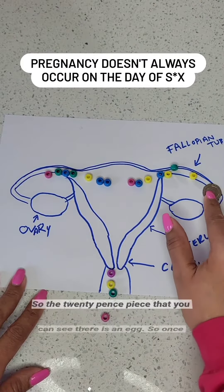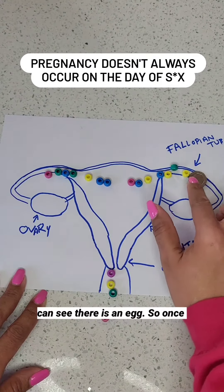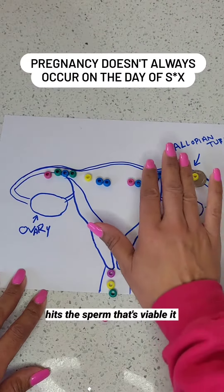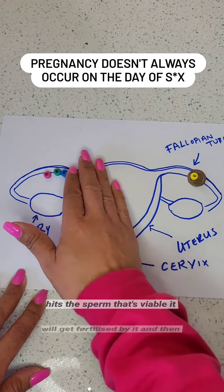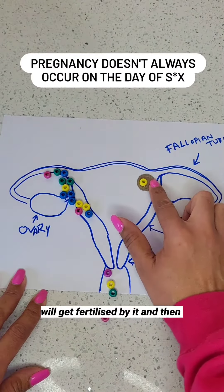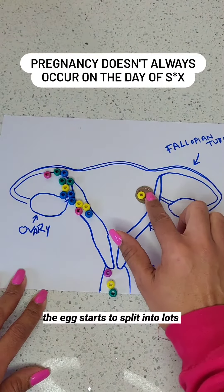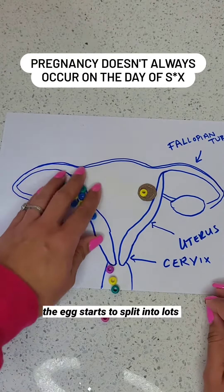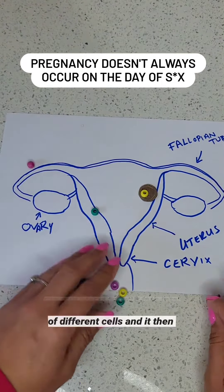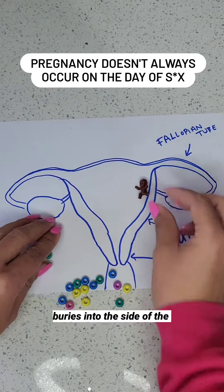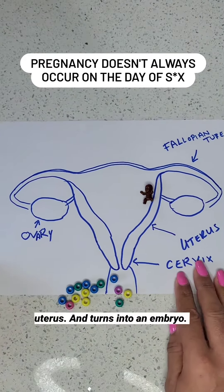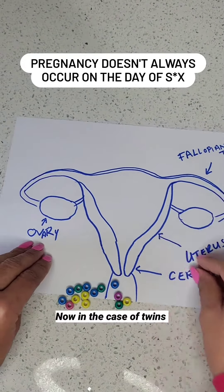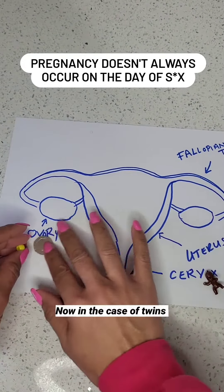The 20 pence piece that you can see there is an egg. So once it gets released, as soon as it hits the sperm that's viable, it will get fertilised by it. Then the egg starts to split into lots of different cells and it then buries into the side of the uterus and turns into an embryo.